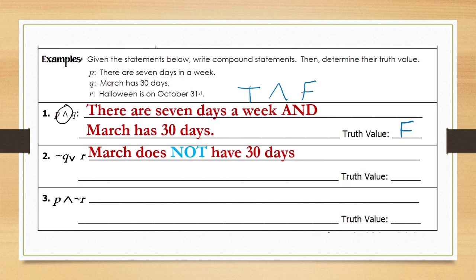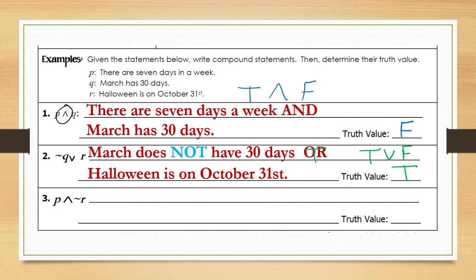For example two: not q — 'March does not have 30 days' — which is actually a true statement because March has 31 days. We connect that with 'or,' making this a disjunction. The next statement r — 'Halloween is on October 31st' — is true. So we have true or true... wait, true or false: since one statement is true, the overall truth value using disjunction 'or' is true.